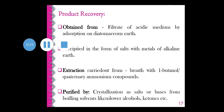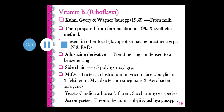For tetracycline product recovery, it is obtained from filtrate of acidic medium by adsorption on diatomaceous earth or activated charcoal, and precipitated as salts with metals of alkaline earth. Extraction is carried out from the broth with 1-butanol or with addition of carrier — quaternary ammonium compounds. Tetracycline forms complex salts with divalent calcium and magnesium, and is purified by crystallization as salts or bases from boiling solvents like lower alcohols and ketones.